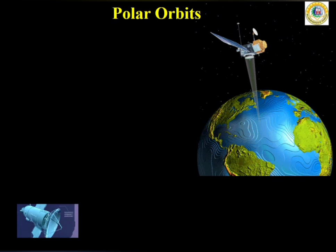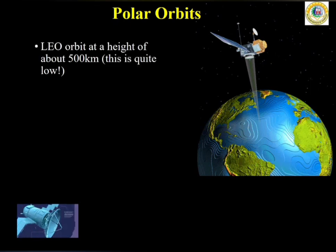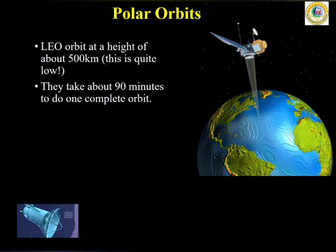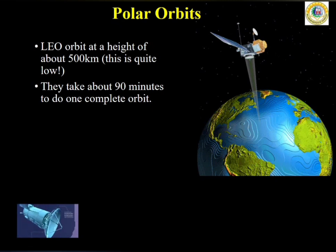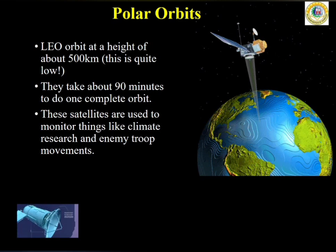Polar orbits: as the name implies, the orbit is in the polar region. It is a LEO orbit — that means low earth orbit — and it encircles the polar region at a height of about 500 kilometers. These satellites take about 90 minutes to complete one orbit, and are usually used to monitor things like climate research and enemy troop movements.